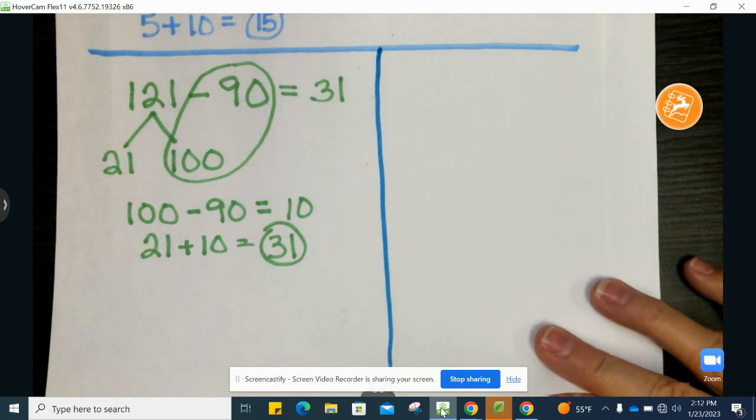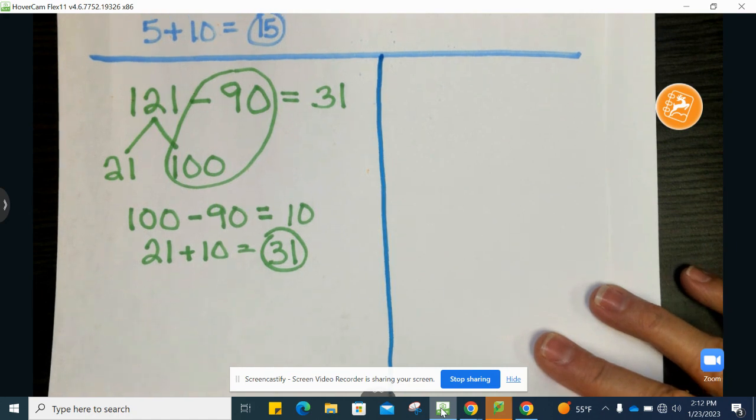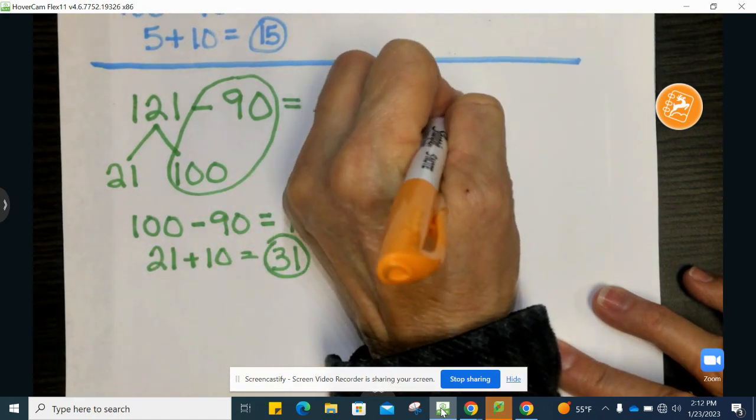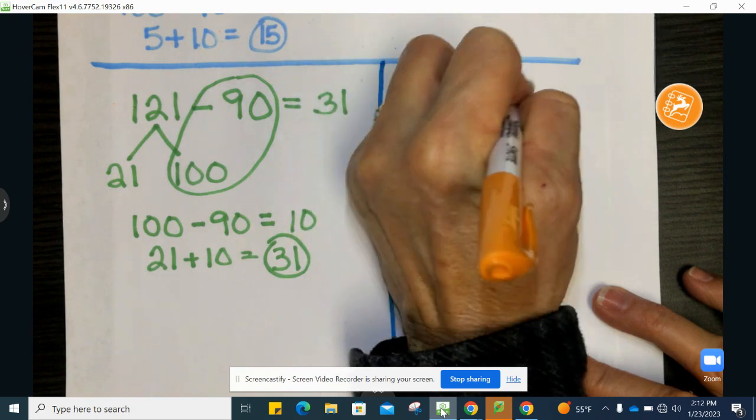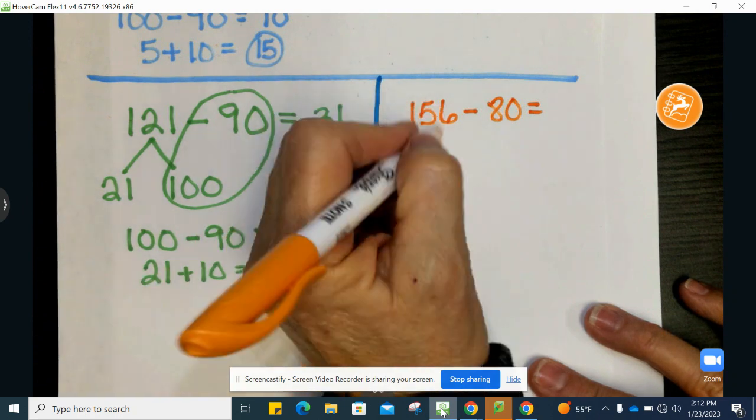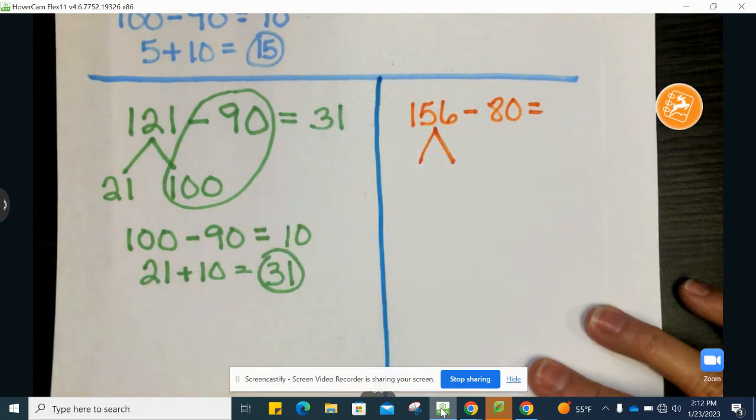The difference between this and the other ones is that for this, we are pulling out 100. Always pulling out 100. So this one is 156 minus 80.